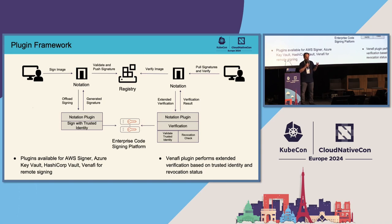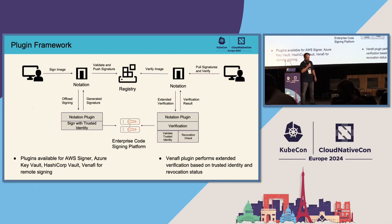We have the ability to perform both signing and verification — it's really pointless to have signing unless you can properly verify software artifacts. The first step is to get the tooling installed, then install a plugin such as the one from AWS, Azure Key Vault, or Venafi. That allows you to offload the critical enterprise requirement: signing with a trusted identity. We take the digest of that artifact, which provides authenticity and integrity, then push that to the registry.